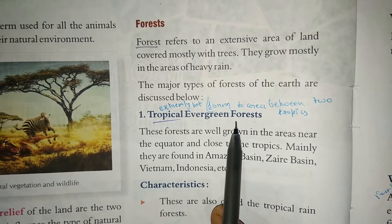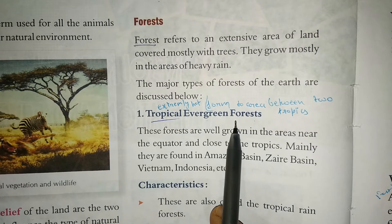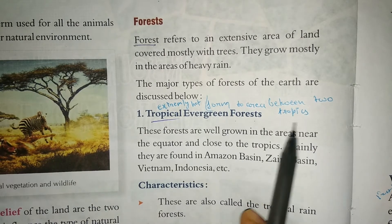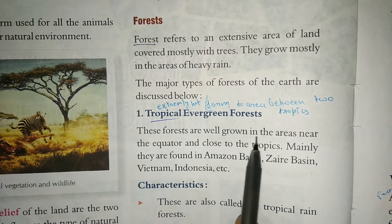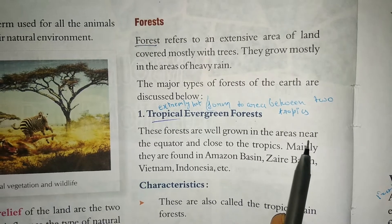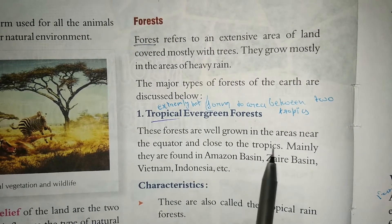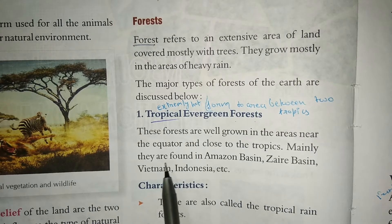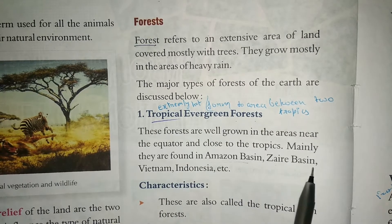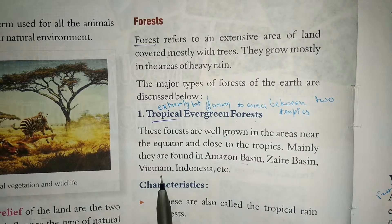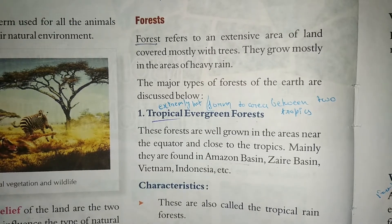Tropical evergreen forests are found in areas of heavy rain between the two tropics, mainly near the equator. They are mainly found in the Amazon Basin, parts of West Africa, Vietnam, and Indonesia.